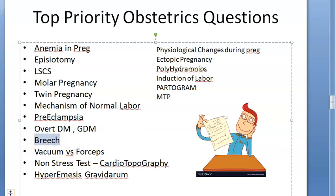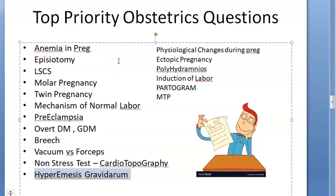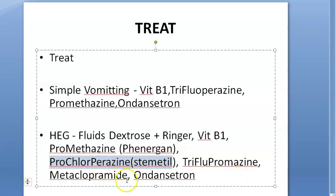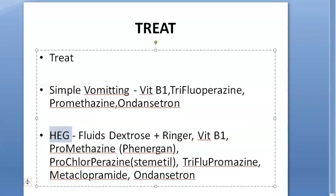Breech delivery: know how to deliver the aftercoming head of a breech - the Løvset maneuver, Burns-Marshall technique, and Piper forceps. Vacuum versus forceps: vacuum is the instrument of choice and is better for the mother; forceps is better for the baby. Non-stress test and cardiotocography are very important. Hyperemesis gravidarum: manage with ondansetron, promethazine, prochlorperazine, and vitamin B1 (thiamine), since the patient will have thiamine deficiency and electrolyte imbalance.